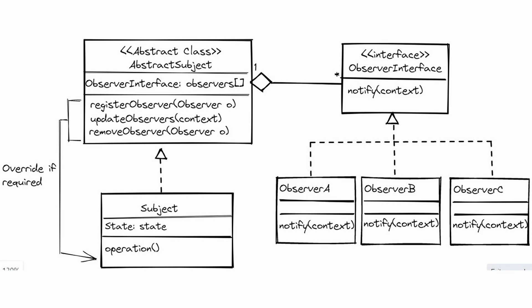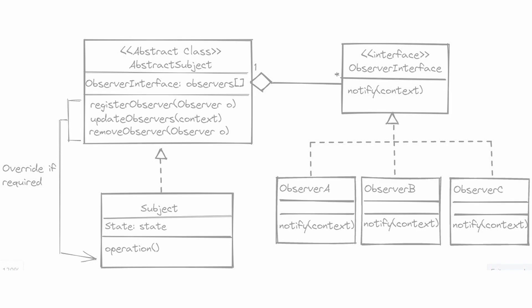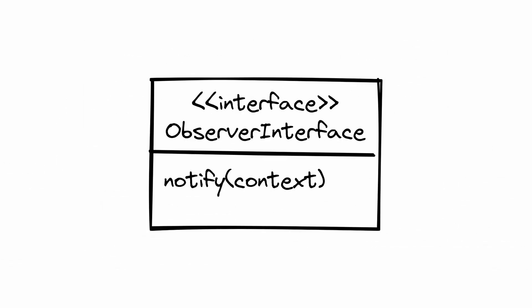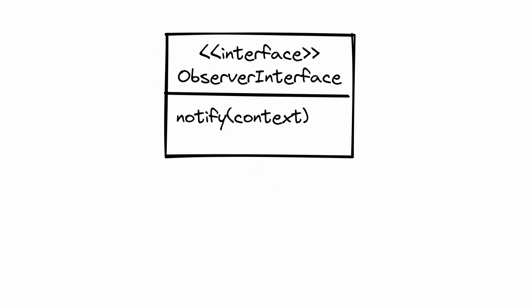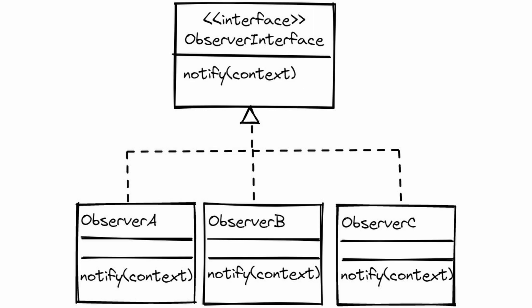There are a few different ways to implement the observer pattern, but most revolve around a class design that includes subject and observer interfaces. Step 1 is to declare the observer interface, which should have a notify method. All observers implement the same observer interface and the subject communicates with all the observers only via this interface.